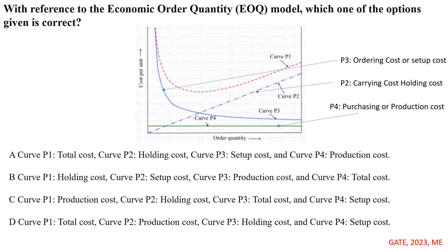Ordering cost or setup cost is inversely proportional to the order quantity. So here, curve P3 is the ordering or setup cost.